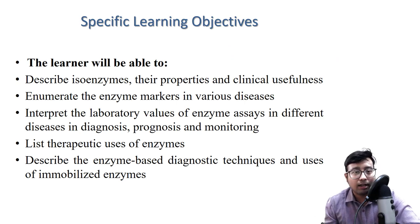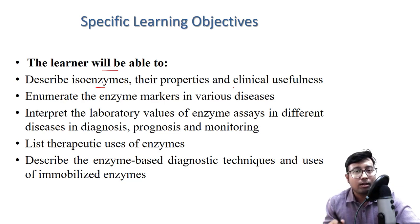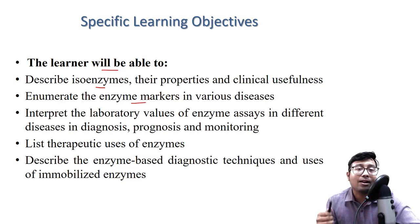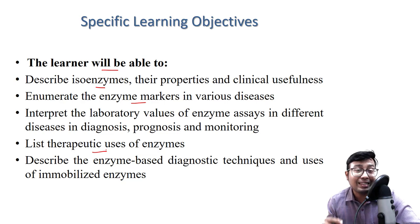At the end of this class, these are the various objectives you should be able to answer. You should be able to describe what isoenzymes are and their clinical usefulness. You should be able to name various enzyme markers of various diseases, interpret their values, and state some roles of enzymes in prognosis, diagnosis, and monitoring of disease. You should also know the therapeutic uses of enzymes.